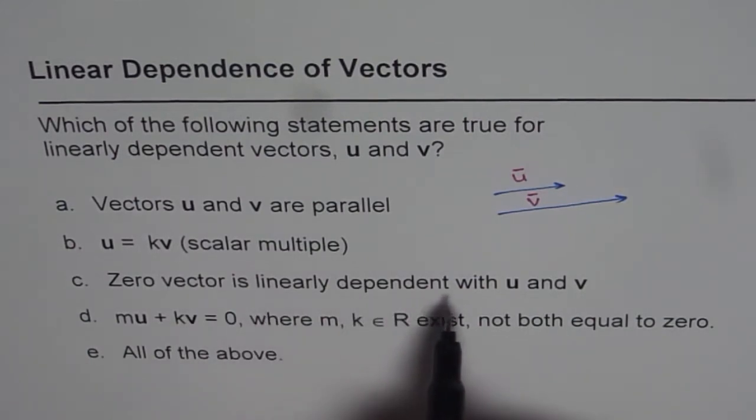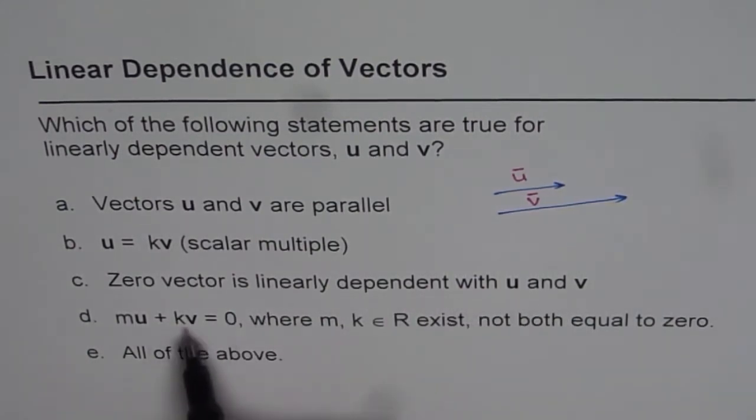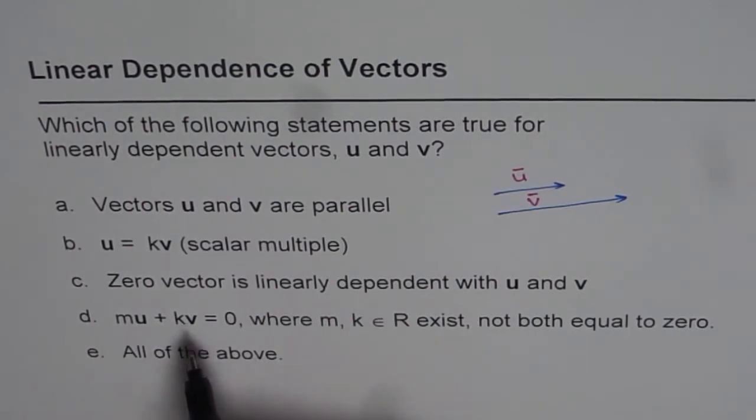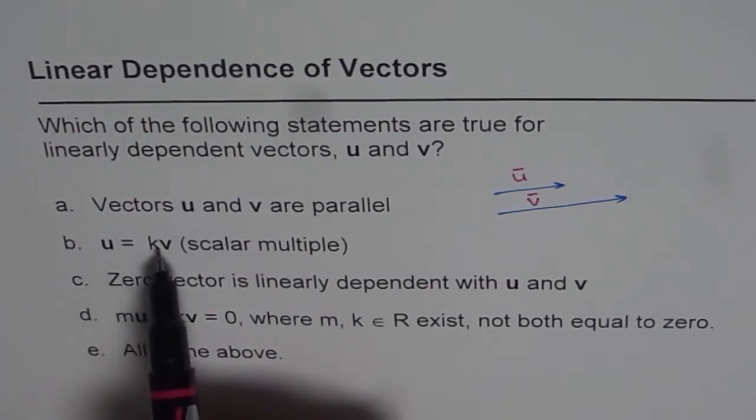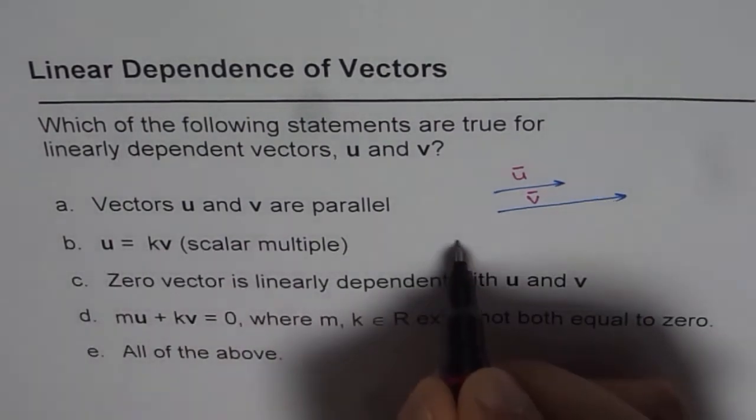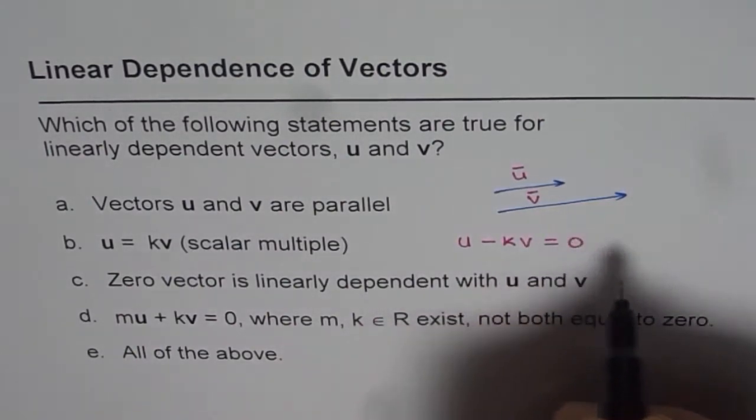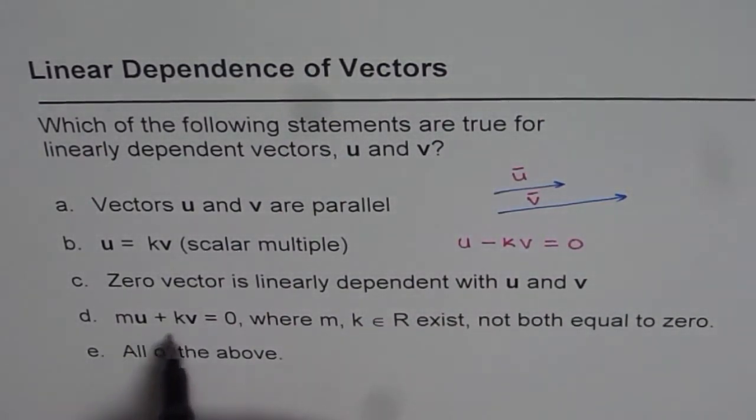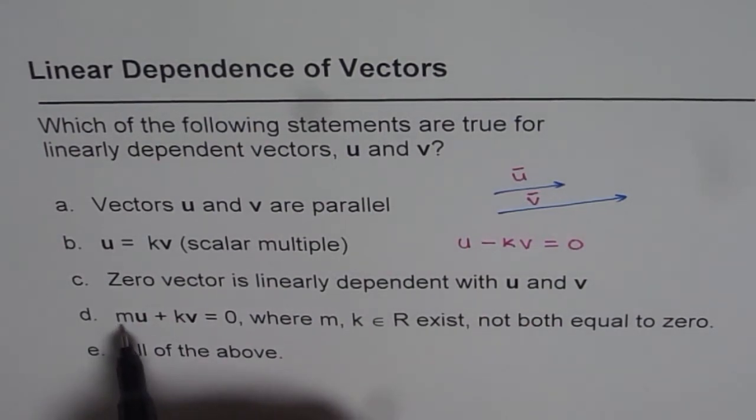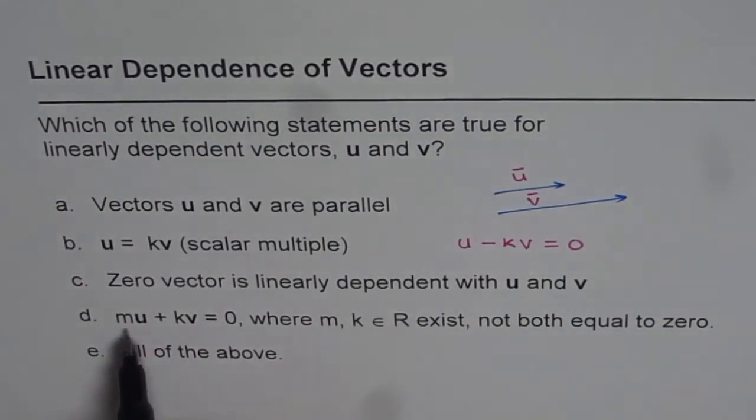Zero vector is linearly dependent with u and v. Well, we will get this from part D. When you say u equals to k v, we could always write it in a different way. We could also write u minus k v equals to 0. Do you see that? That is the other equation where m is 1 for us and k is minus k. That is another way of writing the same thing. m times u plus k v equals to 0.